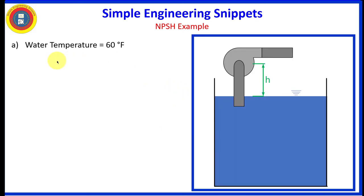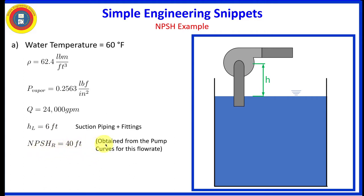Okay, so let's start up. First, water temperature is 60 degrees Fahrenheit. Provided the density, the vapor pressure, the flow rate, and the head loss in the suction piping is 6 feet. And the net positive suction head required is 40 feet, and again, that would normally be obtained from the pump curves for the given flow rate, but it is provided in this example.